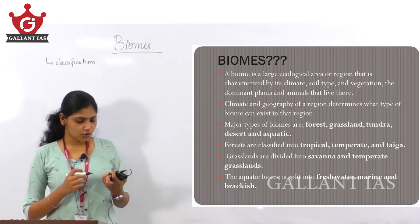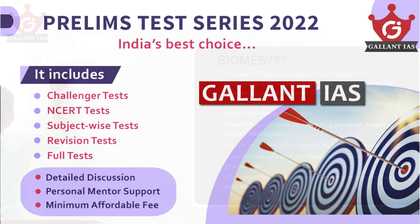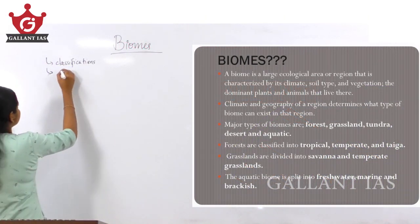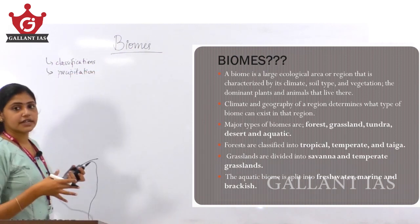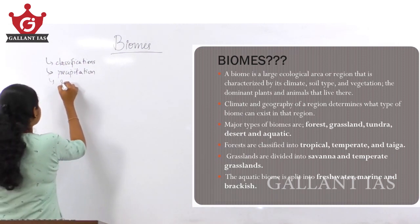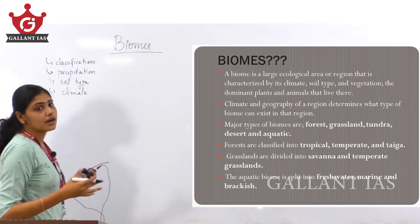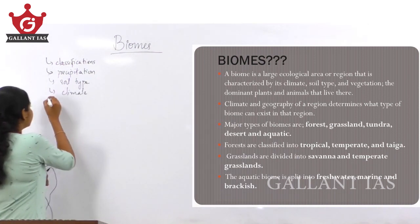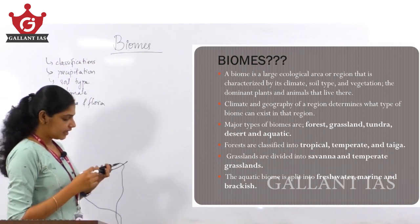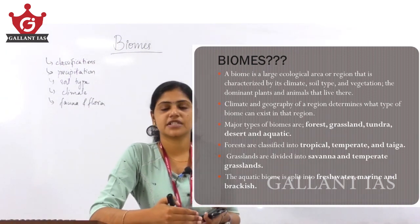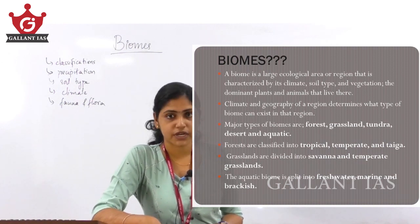When studying the characteristics of biomes, you need to know specifically about the precipitation or rainfall received in that particular biome, the soil type, and the peculiar features of climate present in that biome. You also need to know about the dominant fauna and flora — previous year questions have asked about characteristic features of plants and dominant tree species present in all these biomes.